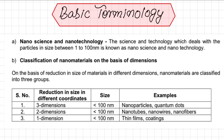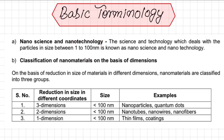Now we will discuss some basic terminology of nanoscience and technology. Nanoscience and technology is the science and technology that deals with particles in size between 1 to 100 nanometers. Whenever we are dealing with particles of this size range, we are using nanoscience and technology. These are very, very minute dimensions.